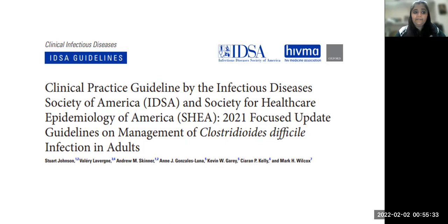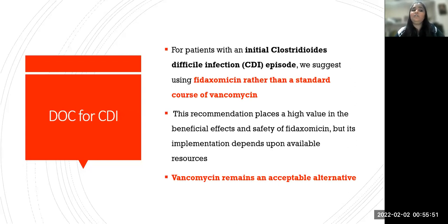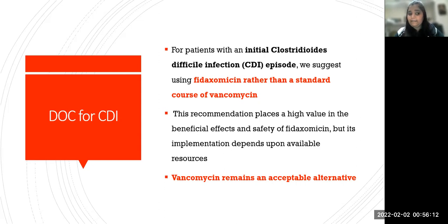In the 2021 IDSA/SHEA update for Clostridioides difficile (note: the nomenclature has changed from Clostridium to Clostridioides difficile), fidaxomicin is still recommended over standard-course vancomycin for the initial episode due to its beneficial effects and safety profile. Due to availability issues, vancomycin remains an acceptable alternative. But if you don't have fidaxomicin, it's vancomycin — not metronidazole anymore. To treat CDI, give oral vancomycin, not metronidazole.